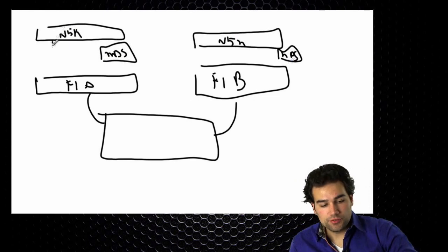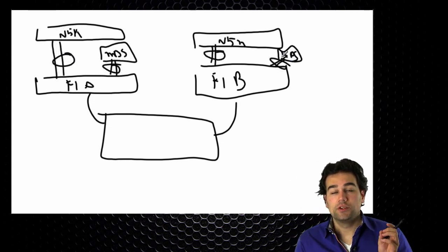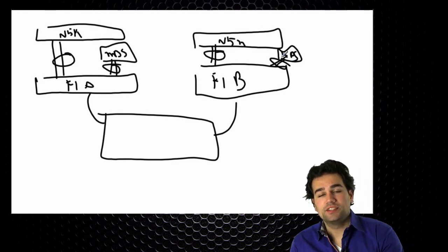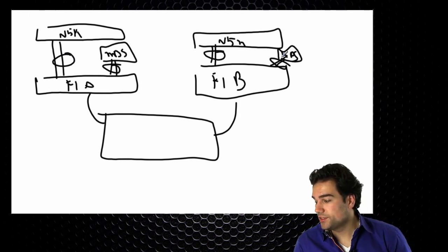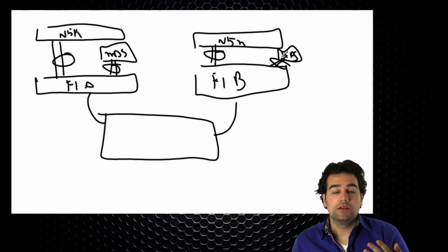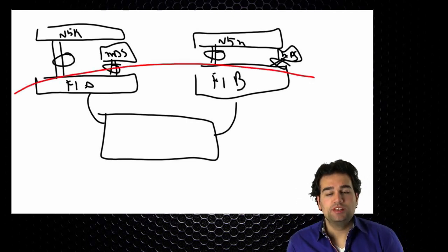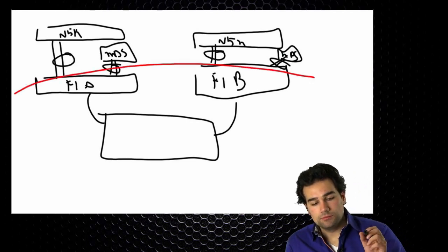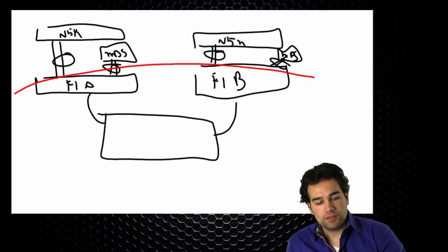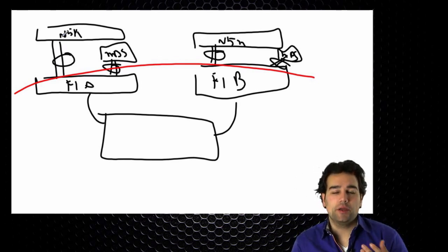We will start configuring local port channels going to the fabric interconnects, and I will have some fiber channel connectivity also, potentially in port channeling. When the FIs are rebooting and resetting their settings, we will start configuring the Nexus 5000s and the MDS switches to make those uplinks available. I will start configuring my Nexus 5K and MDS to show how I prepare my uplink switches for a UCS system.